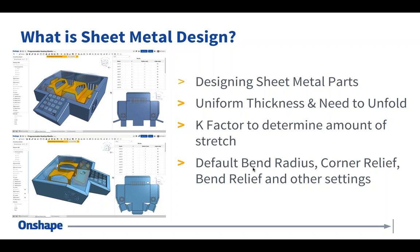The things that make sheet metal design really nice: I can define a default bend radius and not have to design around it. I can sketch straight lines and use them to define sheet metal parts. Default bend radius, default corner relief, default bend reliefs, and all these other settings make sheet metal part design very simple. In short, the rules involved are generally uniform thickness, ability to unfold, ability to determine K-Factor, and setting all those defaults.